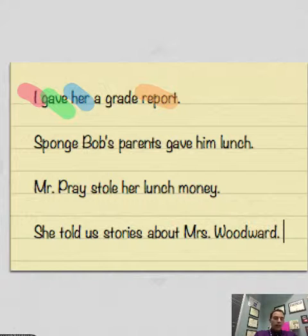So hopefully you guys can kind of see how this works. Again, I would be the subject. Gave is the action. What did you give? You gave a report. Okay, so that is going to be the direct object. Who did you give the report to? You gave it to her. So that's the indirect object. Okay, let's take a look at the next one down.